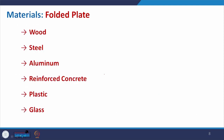The materials that can be used include wood, steel, and reinforced concrete — which is very cost-effective for mass scale application. Aluminum can also be used to reduce the self-weight of the structure. Plastic, glass, and corrugated sheets are already available in the market in the form of folded plate.